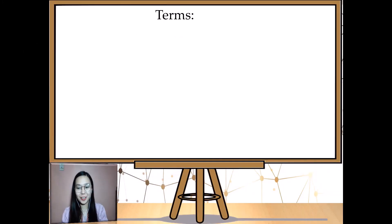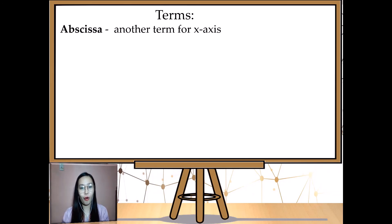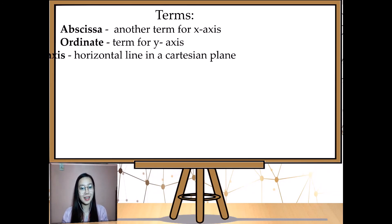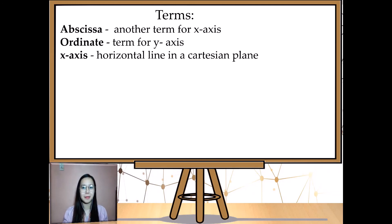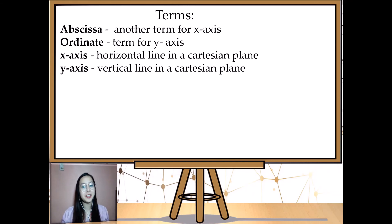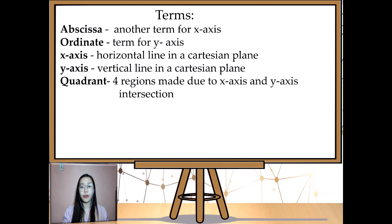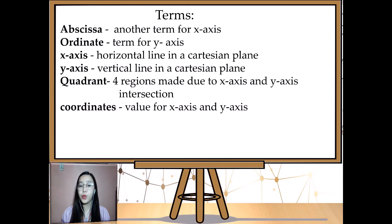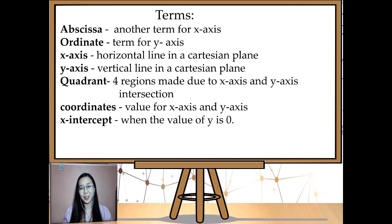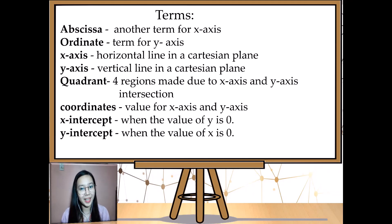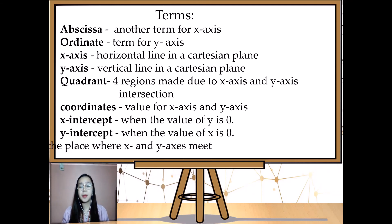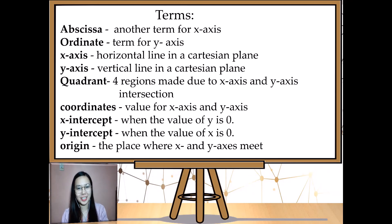Here are the key terminologies from this lesson: Abscissa — another term for the x-coordinate. Ordinate — the term for the y-coordinate. X-axis — the horizontal line in a Cartesian plane. Y-axis — the vertical line in a Cartesian plane. Quadrant — one of the four regions formed by the intersection of the x-axis and y-axis. Coordinates — the values for x and y. X-intercept — when the value of y is zero. Y-intercept — when the value of x is zero. Origin — the point of intersection of the axes.